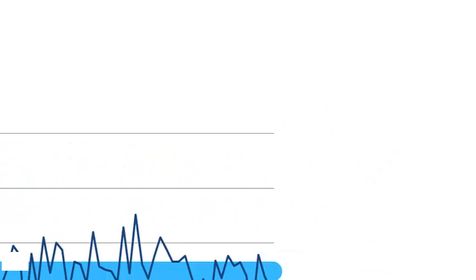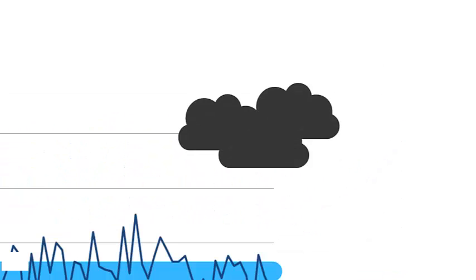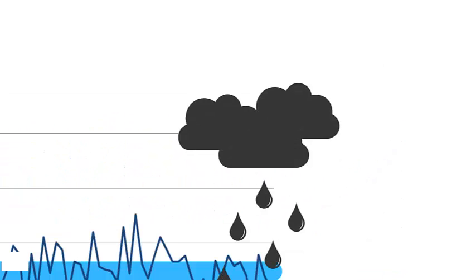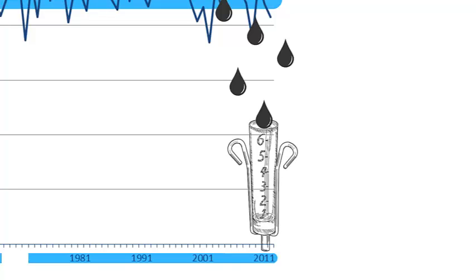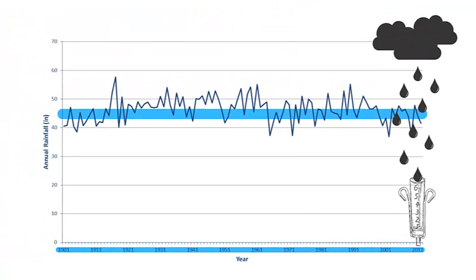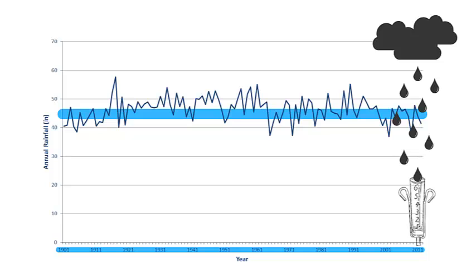Just as important, the event — rainfall — can be easily and transparently measured with a rain gauge, for instance, but can't be affected by the actions of the insured. But index insurance only works in situations where a transparent, reliable, and well-documented index is available.